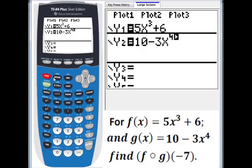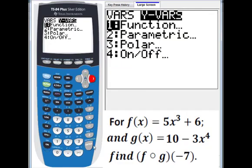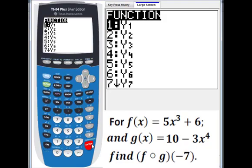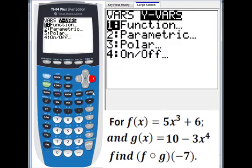Okay, so I quit. You got to know that f(g(-7)) - f means Y1. So I go to variables, you will get Y1 out, then parenthesis. Then you go to Y2, that's